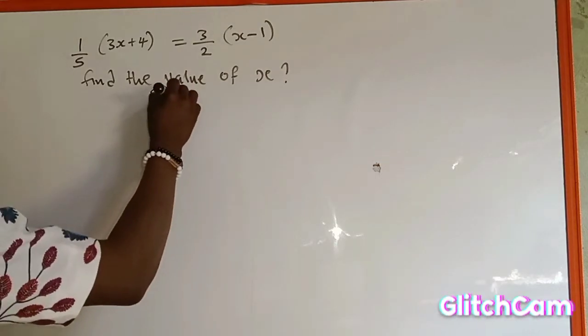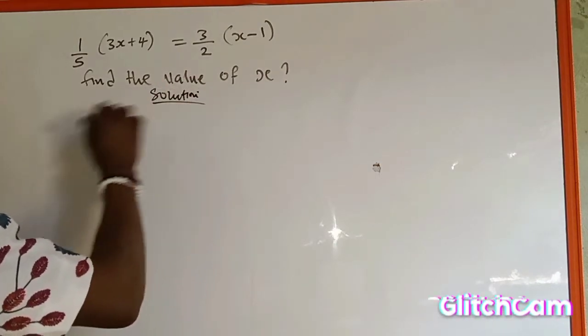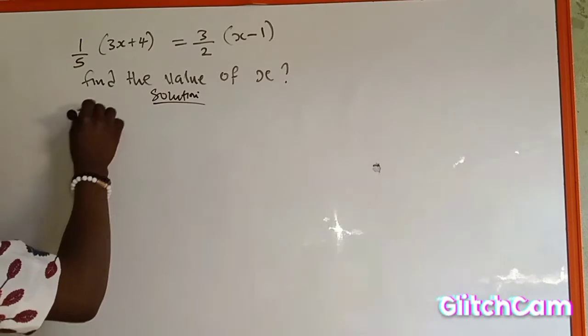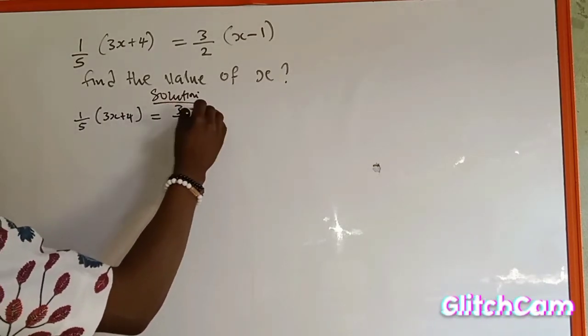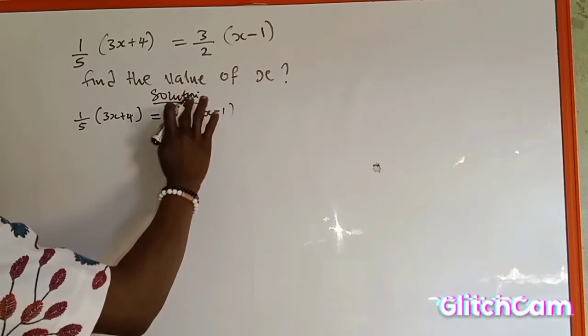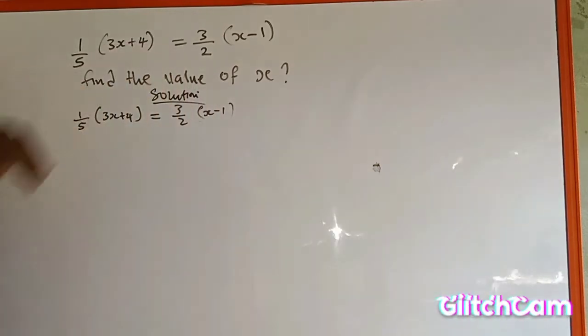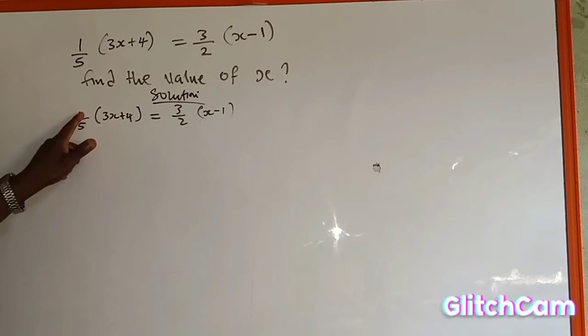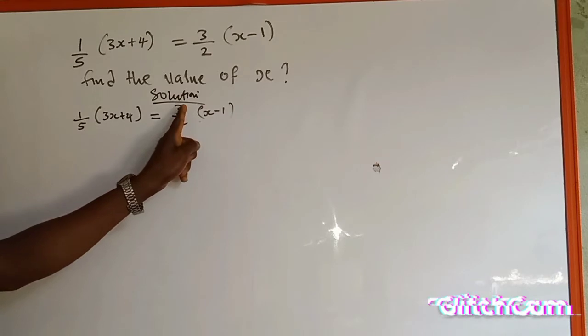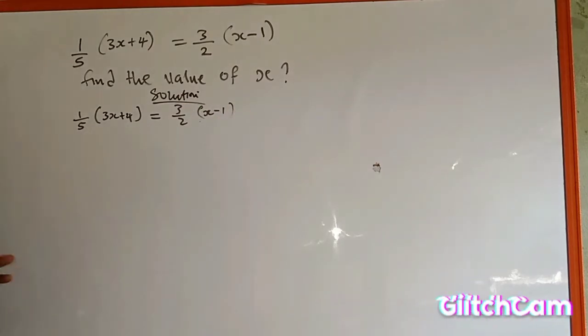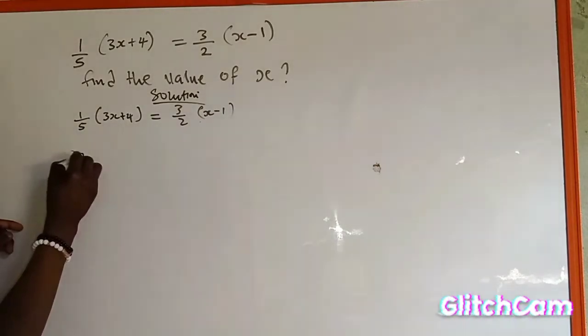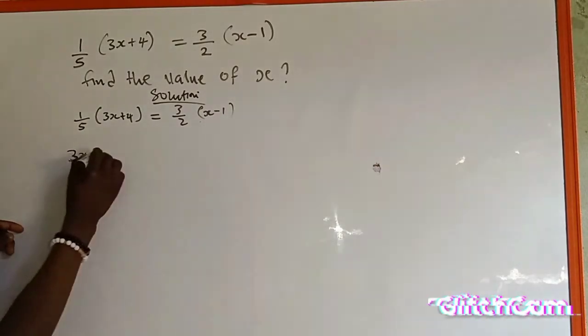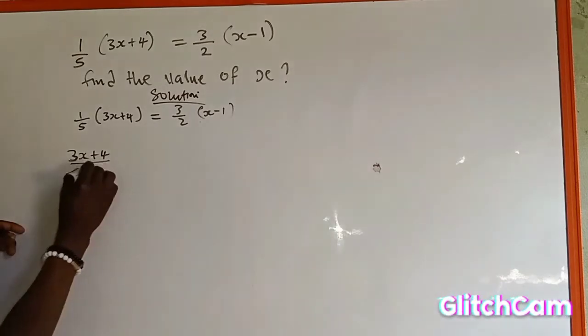So we are going to start by saying solution. The equation is 1 over 5 into the bracket of 3s plus 4, which is equal to 3 over 2 into the bracket of s minus 1. So what we are going to do first is to use this numerator to open the bracket. Now also use this one to open the bracket before we continue. So I will have 1 multiplied by the whole to give me 3s,